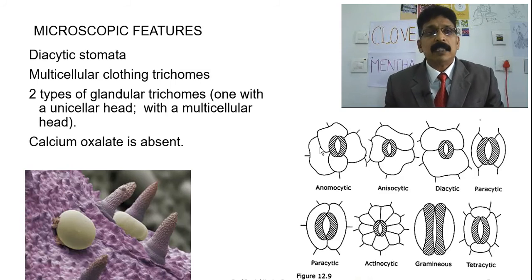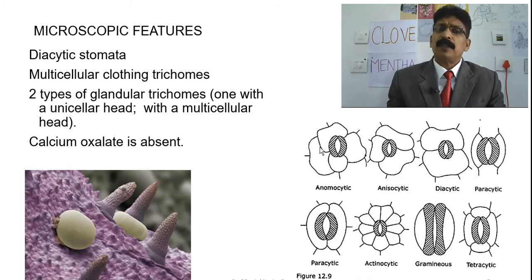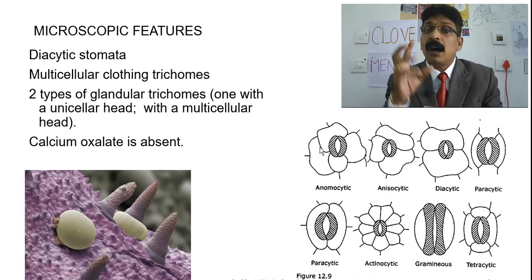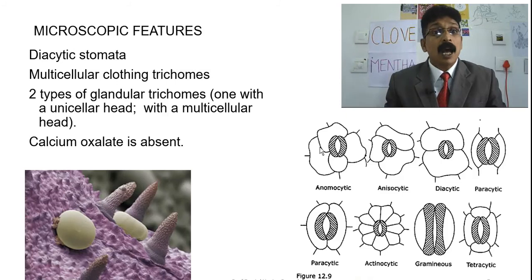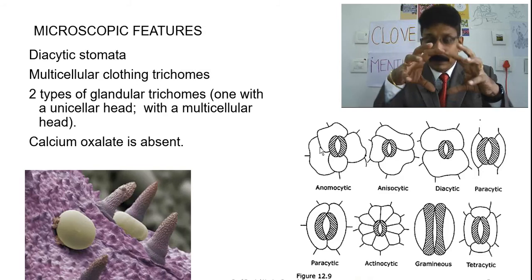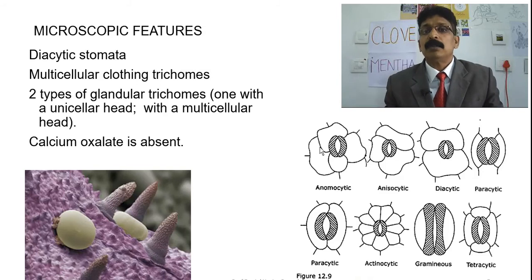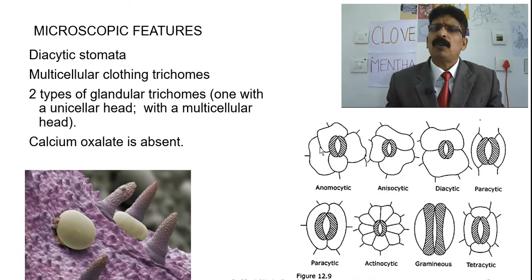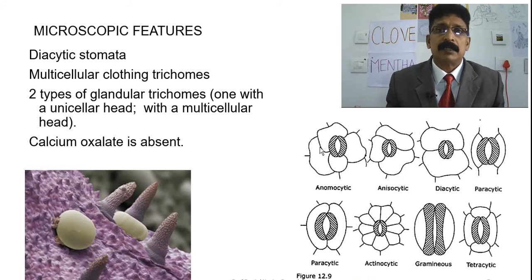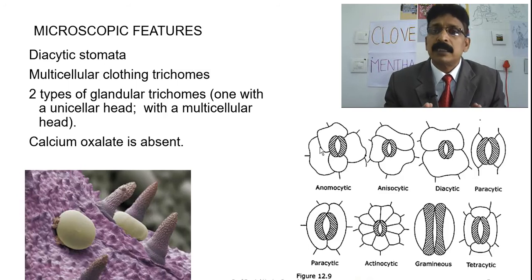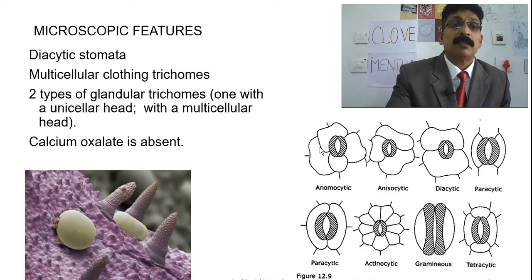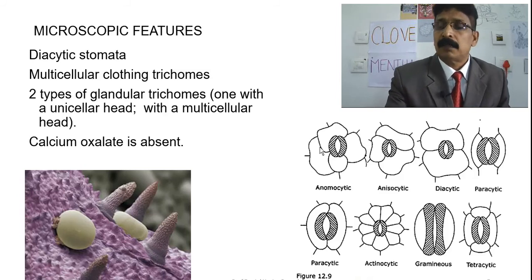There are two types of glandular trichomes: one with a unicellular head, and another with two to three cells in the trichome. Tetracytic stomata can also be seen. Calcium oxalate crystals are totally absent in this drug — this is an important microscopy character, as calcium oxalate crystals are not present in mentha.